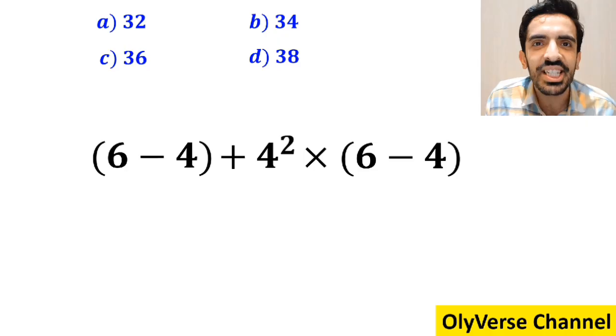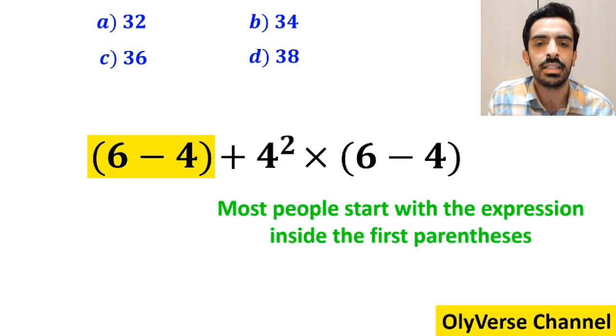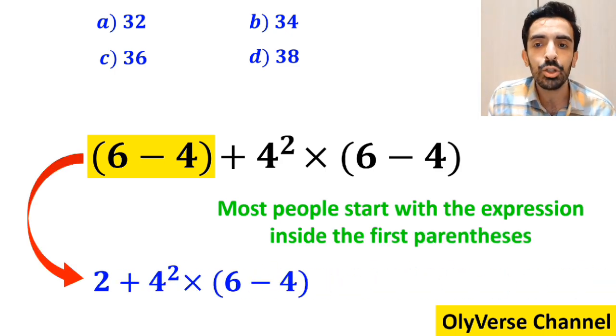Let's break it down and solve it together. The first step to solve this question, most people start with the expression inside the first parenthesis, and simplify this expression to 2 plus 4 squared multiplied by 6 minus 4 inside the parenthesis.